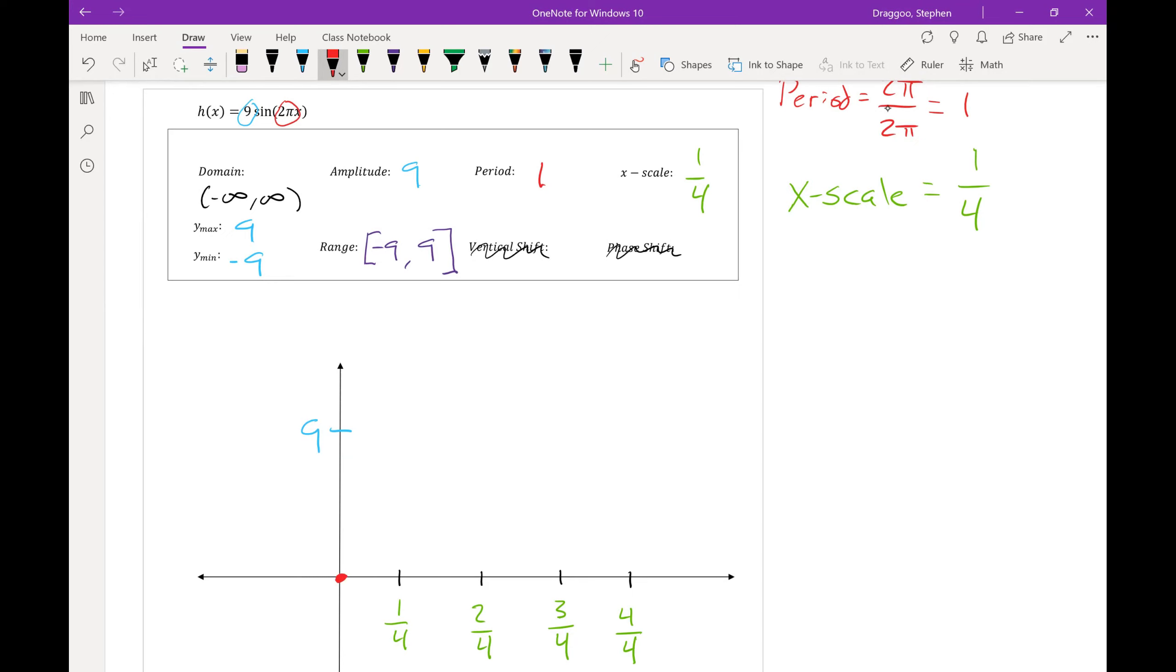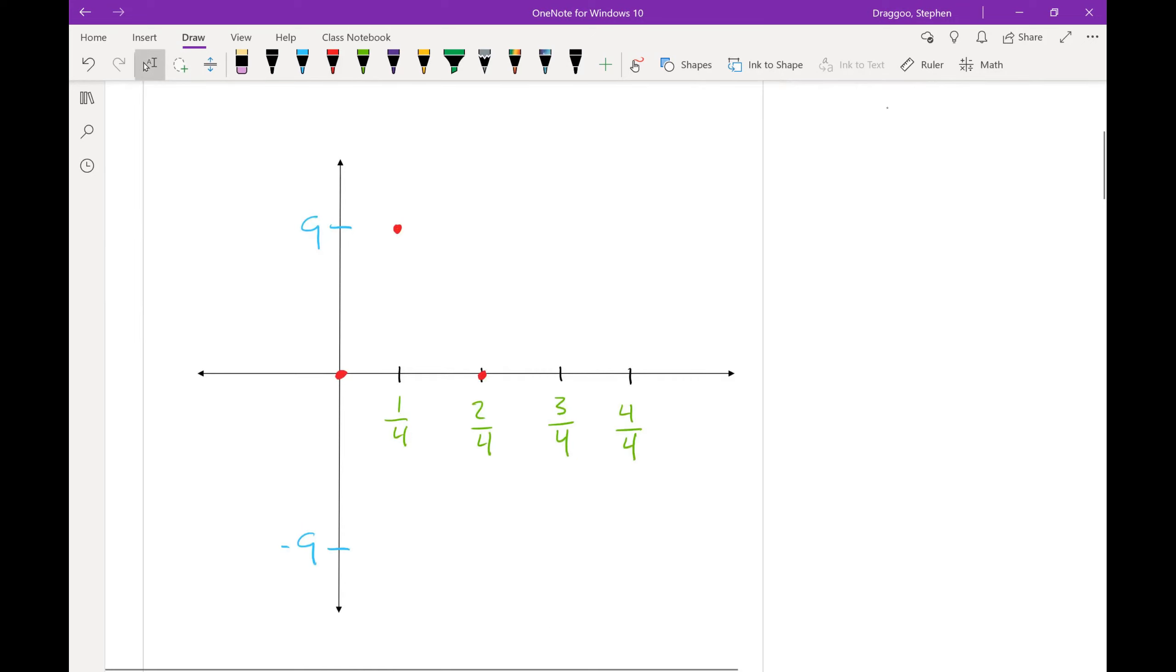This is a positive sine graph, meaning I should be moving up after I start the graph at 0. So at the next point along my x scale, I should be up at my maximum. After that, I return to the middle point. Then down to a minimum. And then back to the middle.